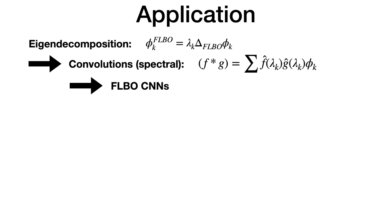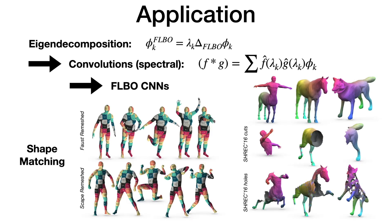From FLBO convolutions, we can create FLBO CNNs to operate on manifolds. We tested our operator by using FLBO CNNs for solving shape matching on reference benchmarks. Our results demonstrate the quality of our operator in comparison to previous heuristic ones.